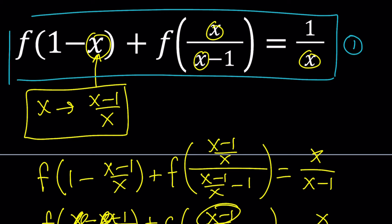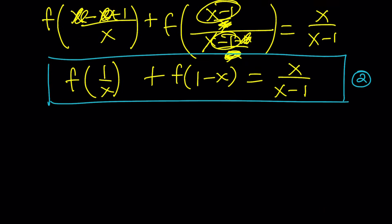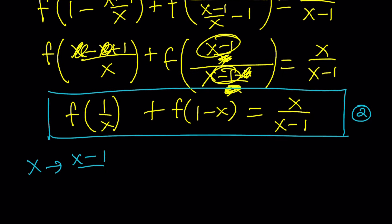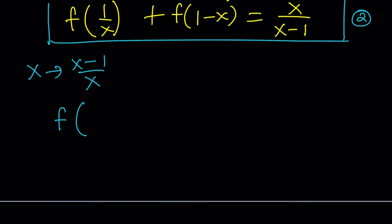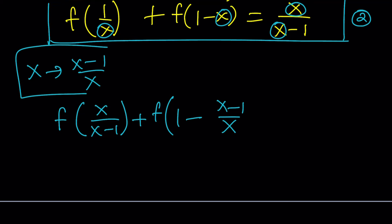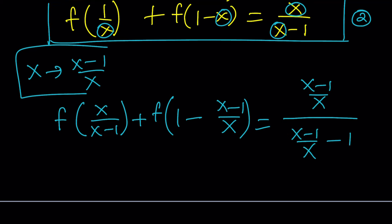We can get a third equation by replacing x with x minus 1 over x again — because it works. When you do it here, you're going to get f of 1 over x, which is the reciprocal, so this becomes f of x over x minus 1. This one is going to be f of 1 minus x minus 1 over x, again from here. Equals x minus 1 over x divided by x minus 1 over x minus 1. So we did all the replacements — simplify this and call it the third equation.